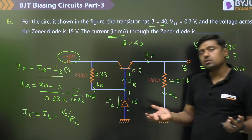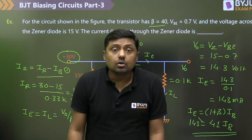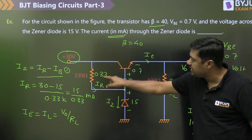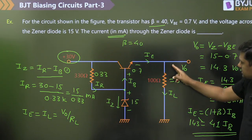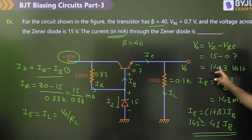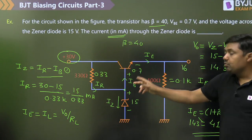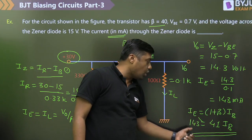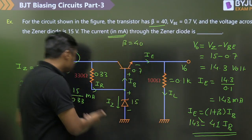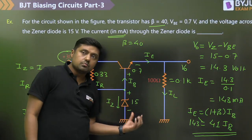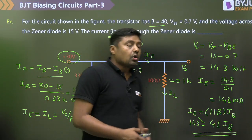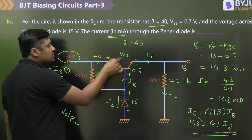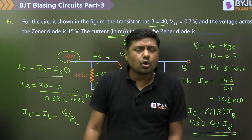This is a very simple question. To summarize: IR equals (30 minus 15) divided by R; IE equals IL equals V0 divided by RL, where V0 equals VZ minus VBE; IB equals IE divided by (1 plus beta); and IZ equals IR minus IB. Once you have IZ, multiply by VZ to get power dissipation across the Zener diode. Since IE is nearly equal to IC, multiply IE by VCE to get the power dissipation across the transistor.